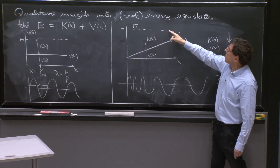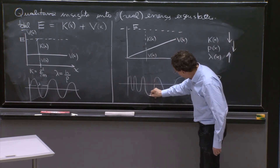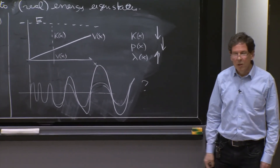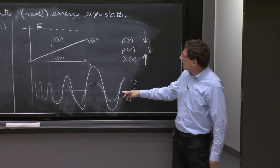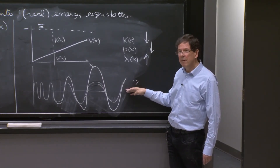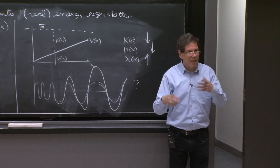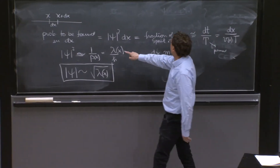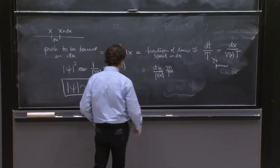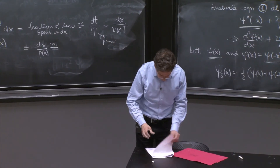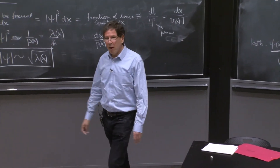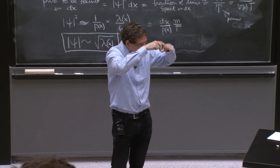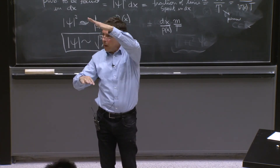Indeed, in the slow region the particle is spending more time, so I should be drawing the wave function a little bigger there. When I try to sketch a wave function in a potential, this is my best guess of how it would be. You will be doing numerical experimentation with Mathematica to get that kind of insight. The position-dependent de Broglie wavelength is a function of the local kinetic energy, and that is one key insight into the plot of the wave function. Without solving anything, you can estimate how the wavelength and amplitude go.